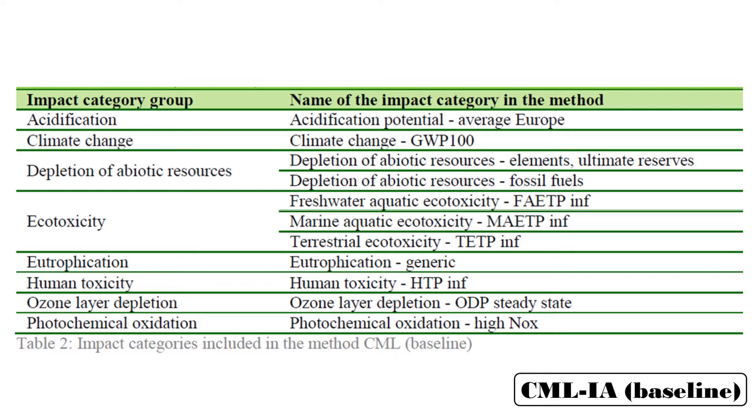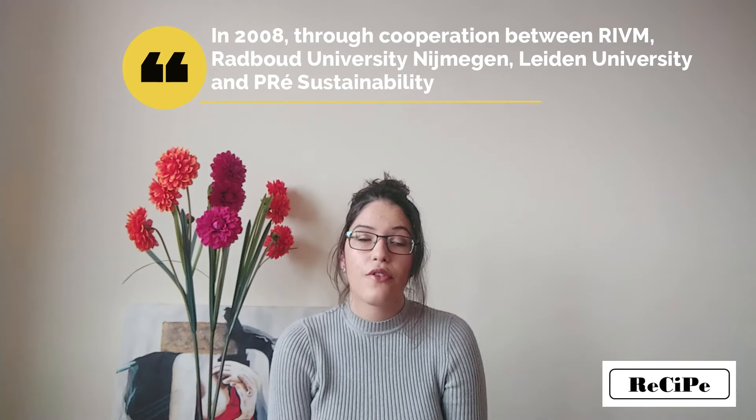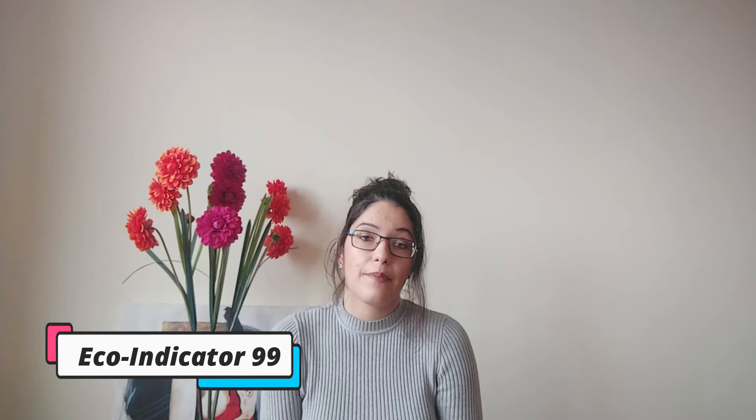In terms of ReCiPe, it was first developed in 2008 through cooperation between four institutions. The ReCiPe method is an updated version combining Eco-indicator 99 and CML. Eco-indicator 99 is considered a good older method but presents a limitation: the assumption that all emissions, land use, and all the damage resulting therefrom also occur in Europe, except damage with long-distance dispersion such as climate change. It came to replace Eco-indicator 95, the first method based on the endpoint approach.